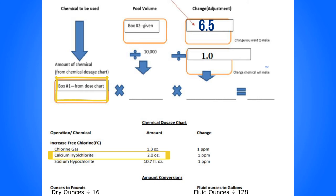On your chemical dosage chart, this is going to be your box number one. So 2.0 ounces goes right here.